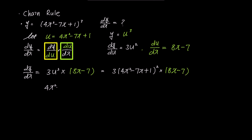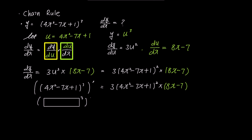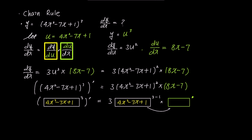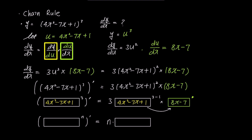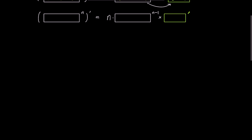To further simplify, the derivative of (4x² − 7x + 1)³ is 3(4x² − 7x + 1)² times (8x − 7). Taking a closer look, the derivative of box³ is 3 times box² times box prime. In general, the derivative of boxⁿ is n times box^(n−1) times box prime. Using this formula, we can easily and quickly perform differentiation without the chain rule, and the same concept applies to integration.